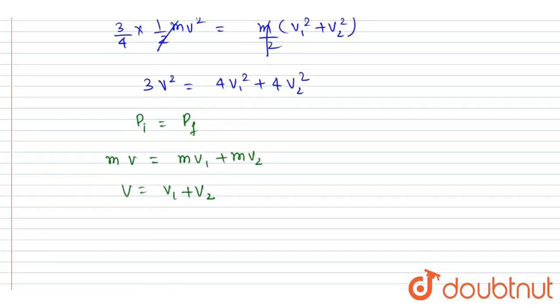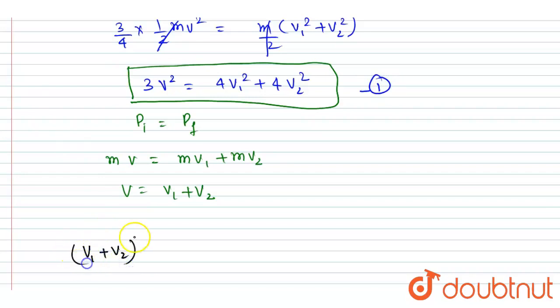And v1 plus v2 is v. So we can write this equation 1 as v1 plus v2 whole squared plus v1 minus v2 whole squared.